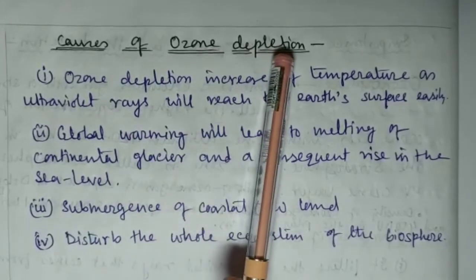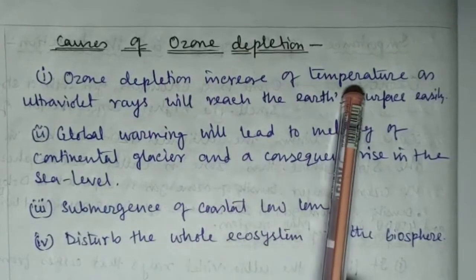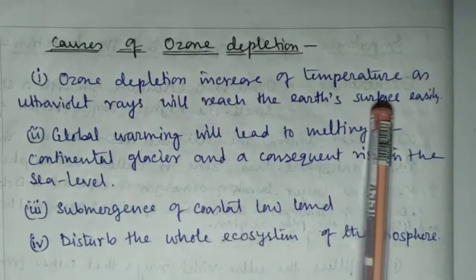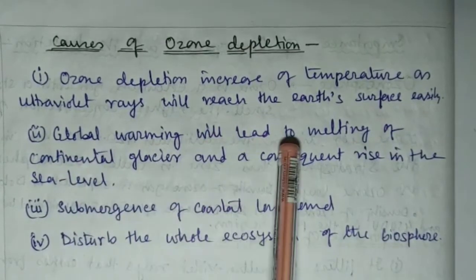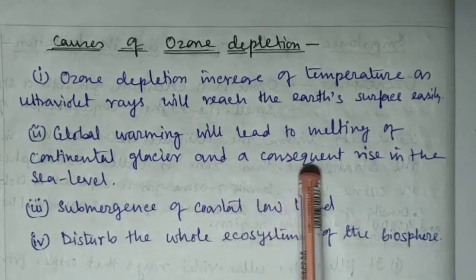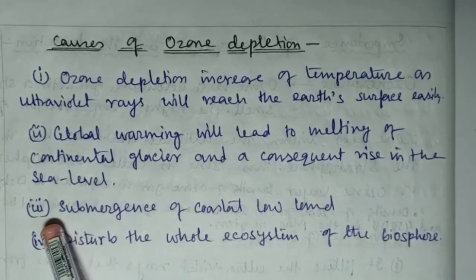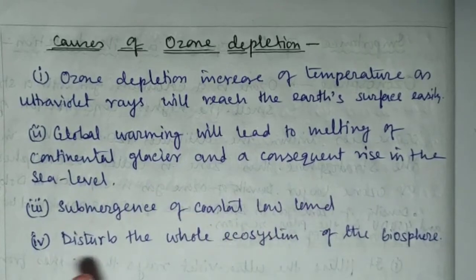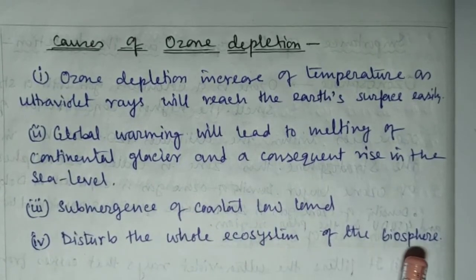Causes of ozone depletion: Number one, increase of temperature as ultraviolet rays will reach the Earth's surface easily. Number two, global warming will lead to melting of continental glaciers and a consequent rise in the sea level. Number three, submerge of coastal lowlands. Number four, disturb the whole ecosystem of the biosphere.